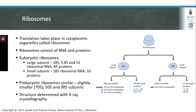Prokaryotic ribosomes are similar but slightly smaller than eukaryotic ribosomes. Prokaryotic ribosomes are approximately 70S in size, and their large and small subunits are 50S and 30S respectively.